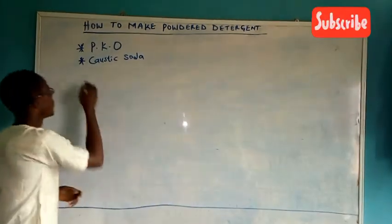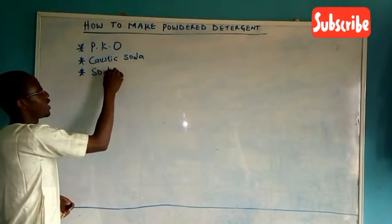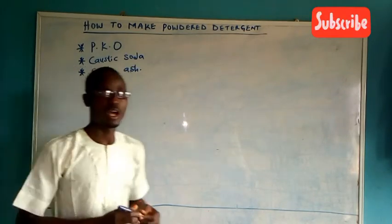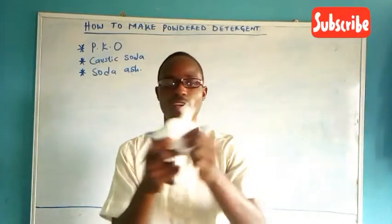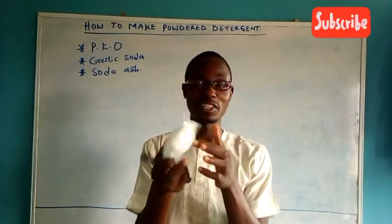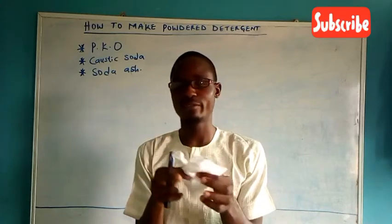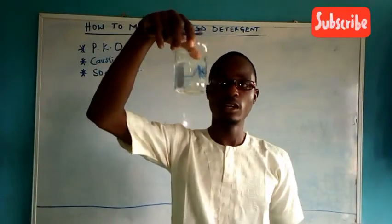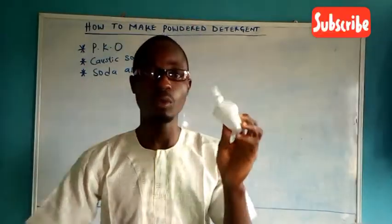Then we have soda ash. I have that in raw form. This is my soda ash. It looks a bit like cassava flakes. We have to prepare it just like the caustic soda — dissolve it in solution and ferment over 24 hours before we use it.